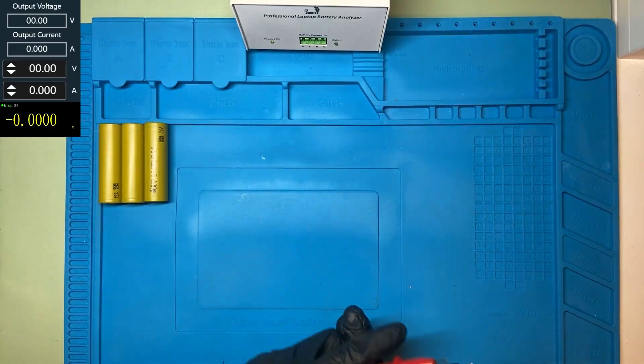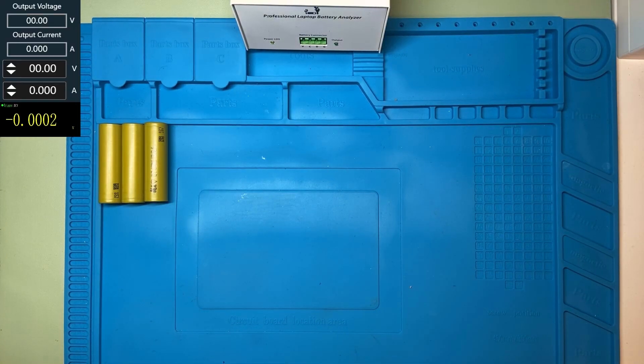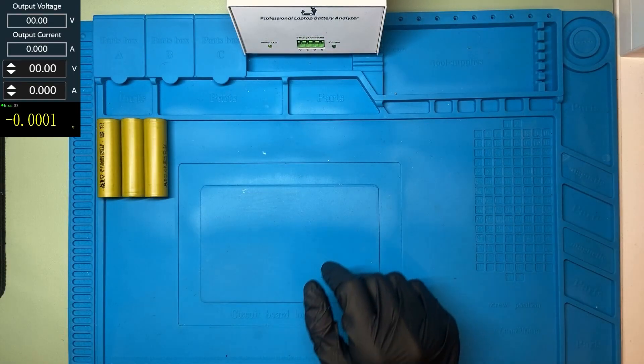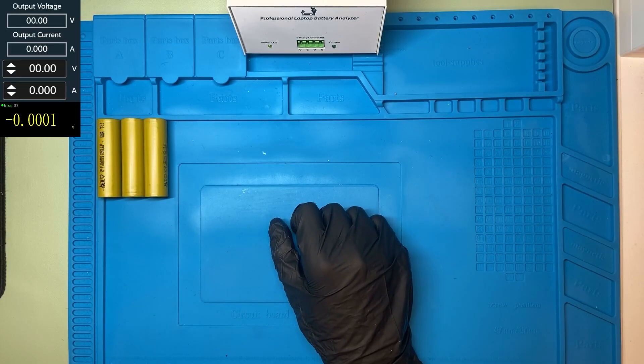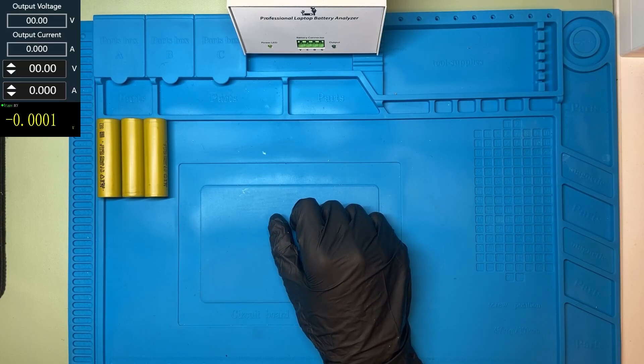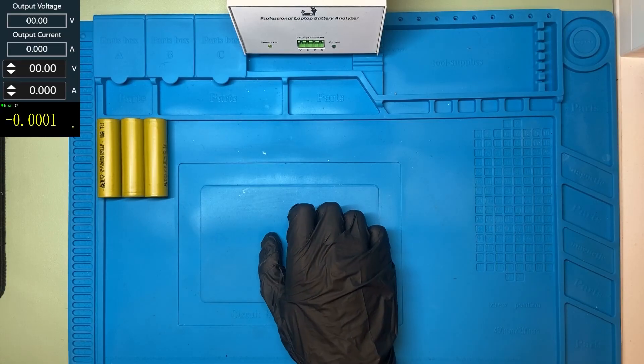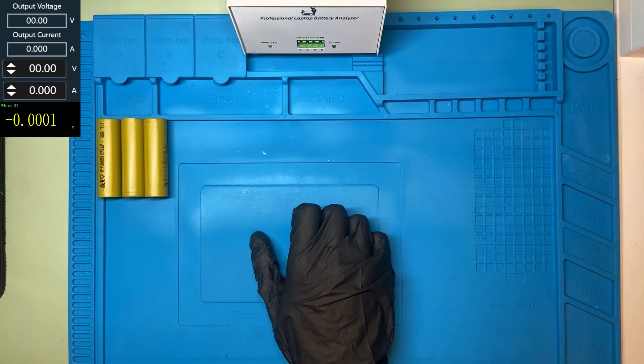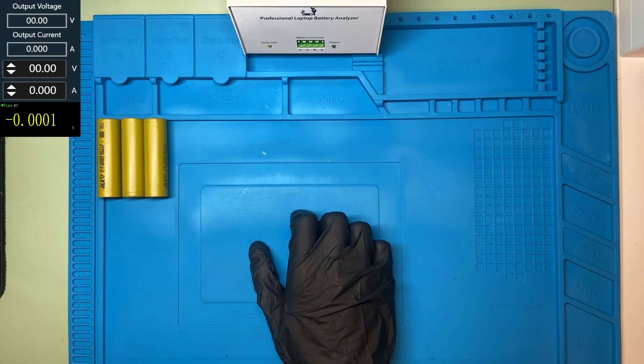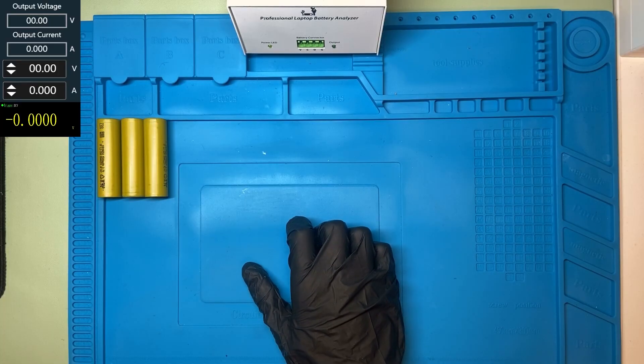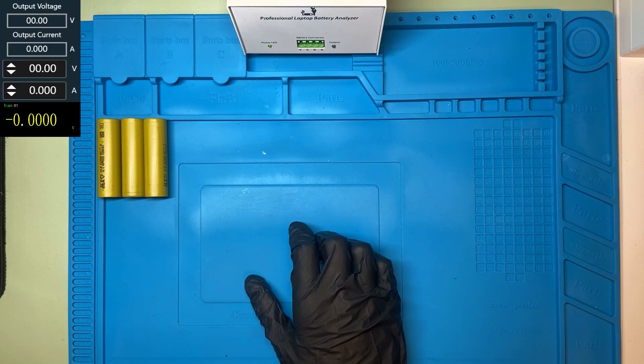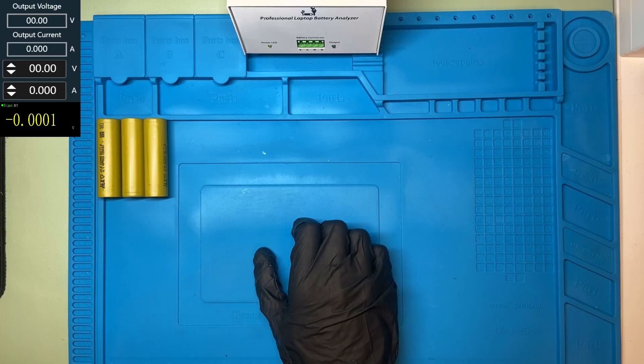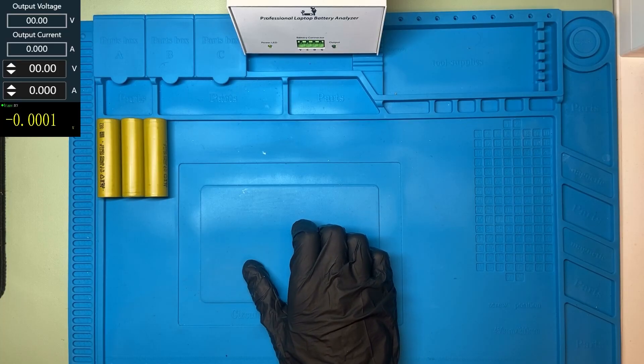We don't need this thing anyway. The pack we are going to make is 3 series 1 parallel type. So the battery pack voltage will be 11 volts and it will have a capacity of 1150 mAh. Now we are going to weld the cells together. I will use a spot welder and some nickel 0.1 mm strips to connect them safely.